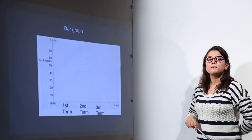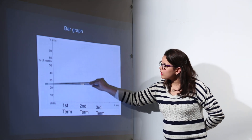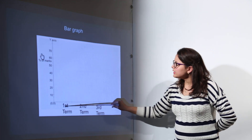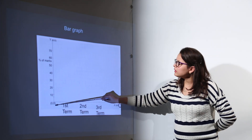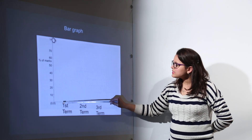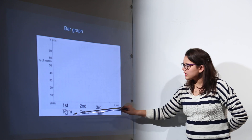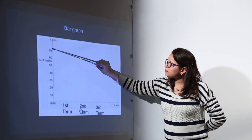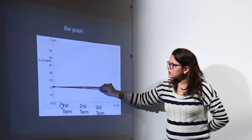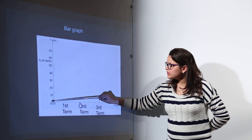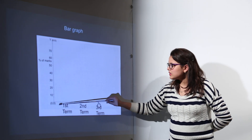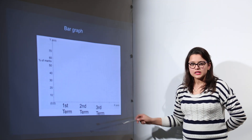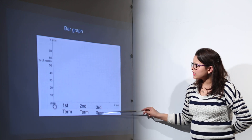Bar graph representation requires you to have a graph sheet. The graph sheet has one x-axis and one y-axis. On the x-axis we represent the number of terms — first term, second term, and third term. On the y-axis we have the percentage of marks on equal intervals of 10 each. The point where both axes start is the origin point, which is 0,0. So on the y-axis we have all the percentages of marks, and on the x-axis we have all the terms.